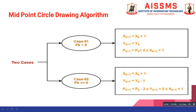When pk is less than 0, the formula to calculate xk+1 is xk plus 1, where xk is the x coordinate of the current point. The formula for yk+1 equals yk, where yk is the y coordinate of the current point. The formula for the next decision parameter pk+1 is pk plus 2 times xk+1 plus 1. The values of pk and xk+1 are already calculated in the previous step, so we substitute those values.